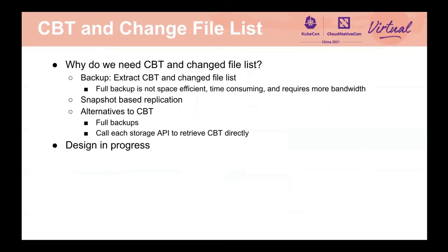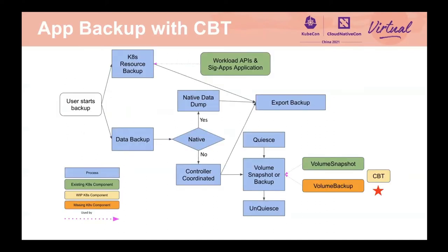The next missing building block is CBT — change block tracking — and the change file list. Without CBT and change file list, backup vendors have to do full backups all the time, which is not space efficient, takes longer to complete, and needs more bandwidth. Another use case is snapshot-based replication, where you take snapshots periodically and replicate to another site for disaster recovery. Without CBT, we either do full backups or call each storage vendor's API individually to retrieve CBT, which is highly inefficient. We are currently working on a design for this feature, and in the diagram, CBT is in the yellow box indicating it is a work-in-progress.